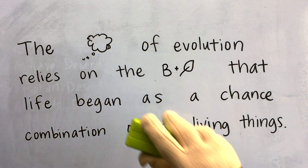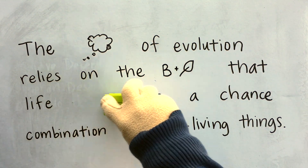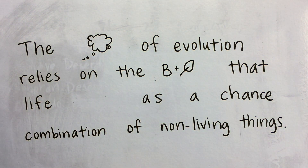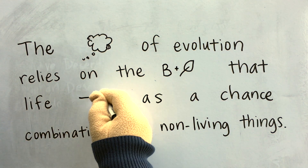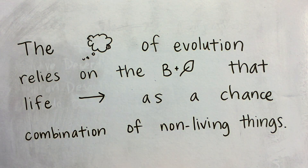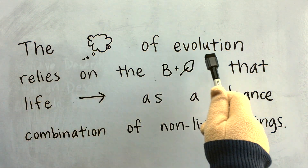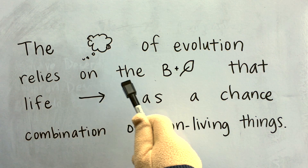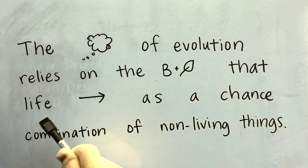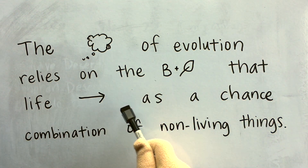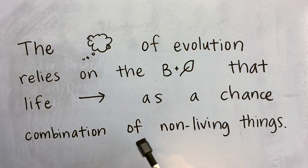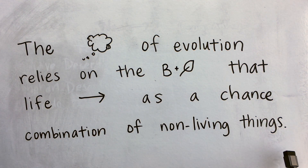Now let's change the word began to an arrow, because an arrow reminds me of the word began, or start. Let's try saying this together: The theory of evolution relies on the belief that life began as a chance combination of non-living things.